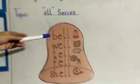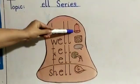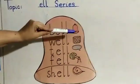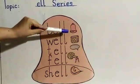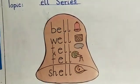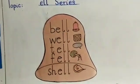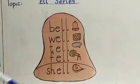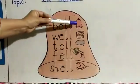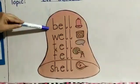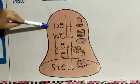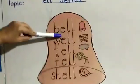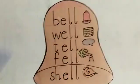Look at the board. Look at the picture. What is this? This is a picture of bell. And the starting letter of bell is B. Ba-el: bell.